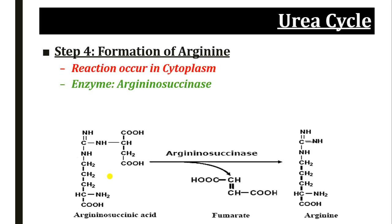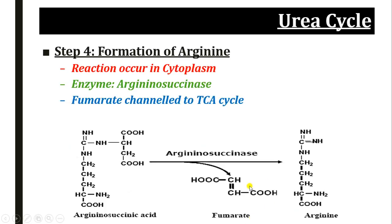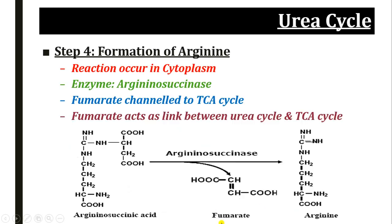Step 4 is the formation of arginine, which also occurs in the cytoplasm. The argininosuccinic acid is acted upon by argininosuccinate lyase enzyme, which splits it into arginine and fumarate. The fumarate produced in this step is channeled to the TCA cycle, so fumarate acts as a link between the urea cycle and the TCA cycle. Another significance of this step is that it provides arginine, making it a semi-essential amino acid.